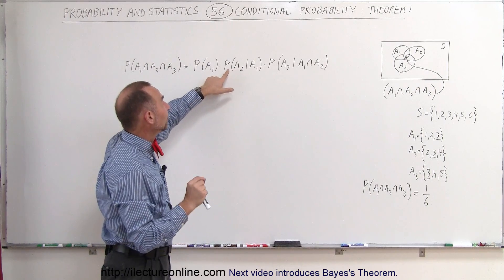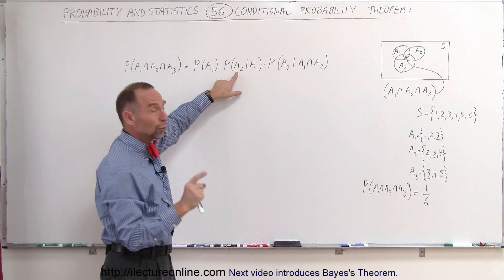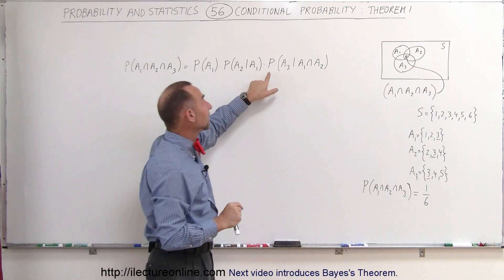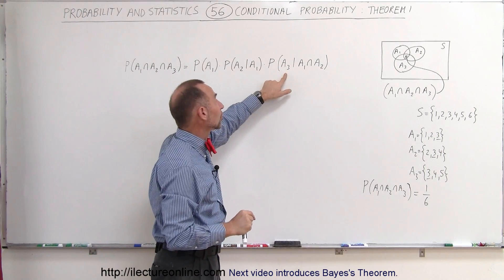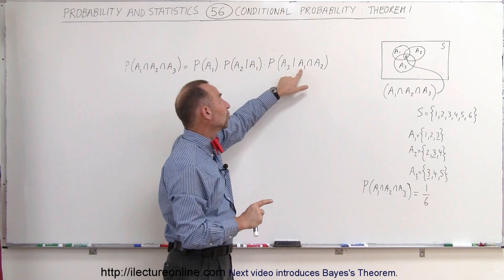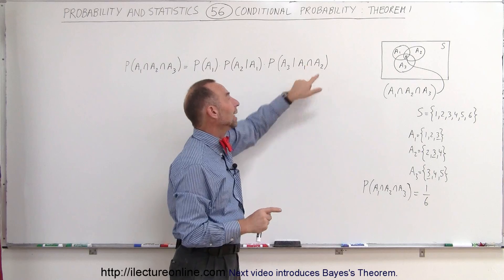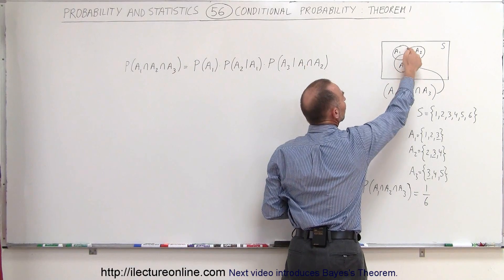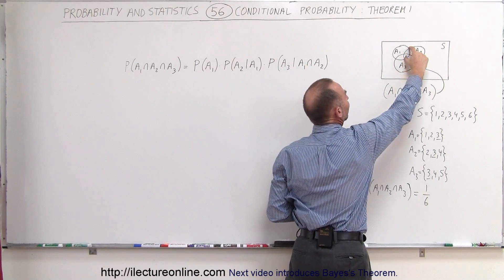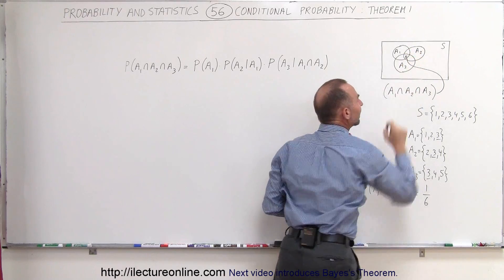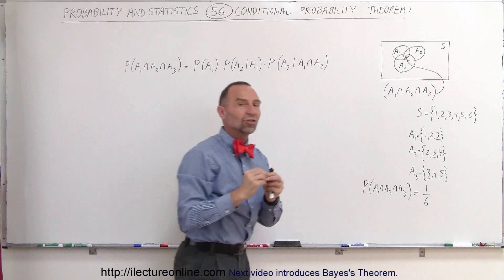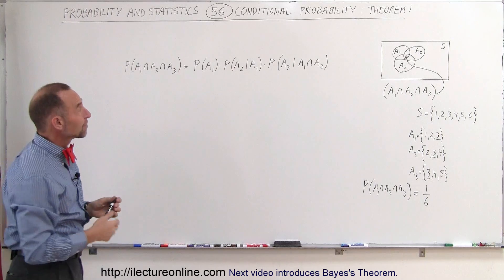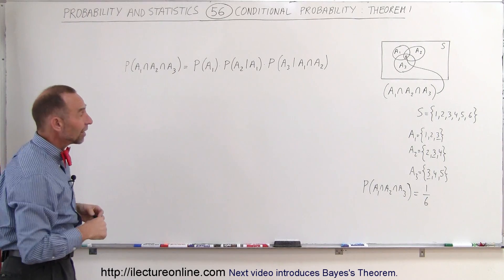You then find the probability that A2 will occur once A1 has occurred, times the probability that A3 will occur once you have the intersection between A1 and A2. In other words, you need the intersection of A1 and A2 to have occurred before you can get the intersection of all three events. That's what the theorem says.